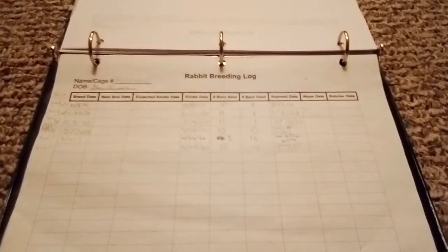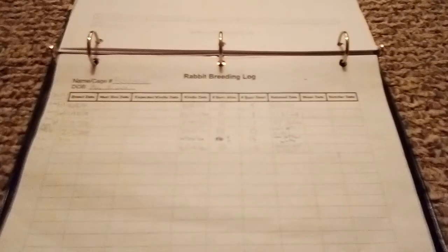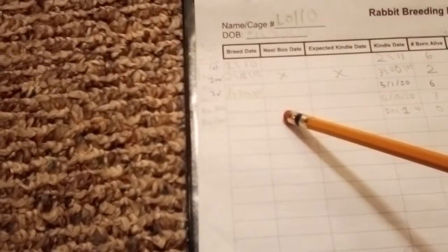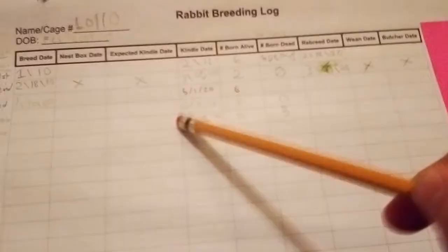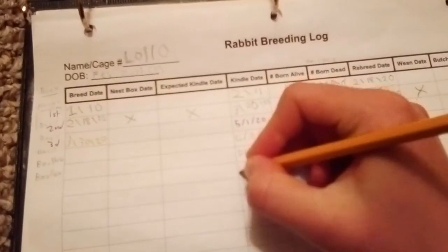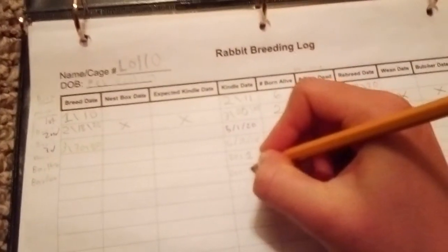Now I'm gonna show you how I fill out Lolo - she just had a litter. This sticky note has details about one litter that I wanted to remember. Lolo is her name, she was born February 2017. The buck she was bred to is Barlow, so we'll write Barlow there.